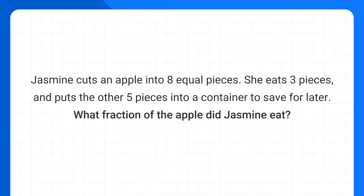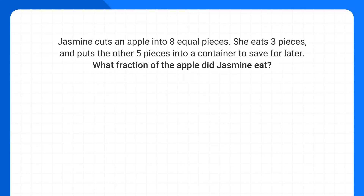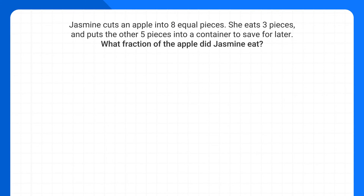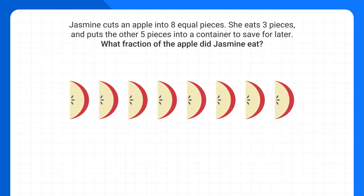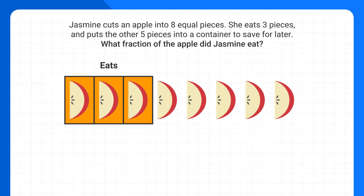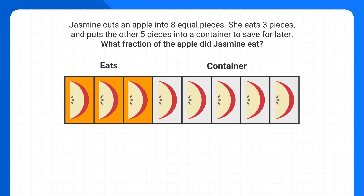Every time I have a word problem like this, I try to imagine what's happening. Here I can imagine that Jasmine has this apple and cuts it into eight pieces. Then she eats three pieces and puts the other five into a container.